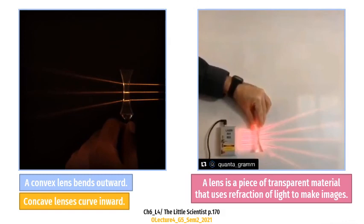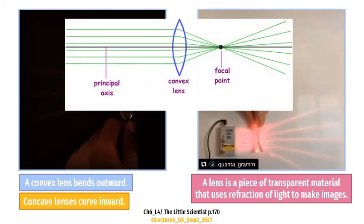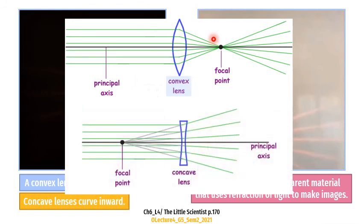Convex lenses form images by refracting light rays together — they put all light rays together at the same point. Concave lenses form images by refracting light rays apart. Concave lenses have thick edges, while convex lenses have thin edges. Here is a convex lens: it has thin edges and puts all the light rays together. Look at the concave lens: it has thick edges and refracts light rays apart.